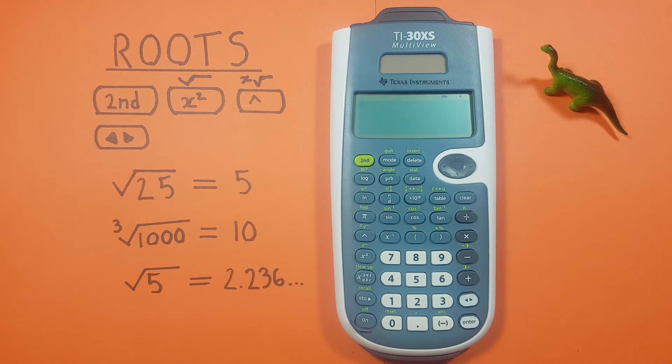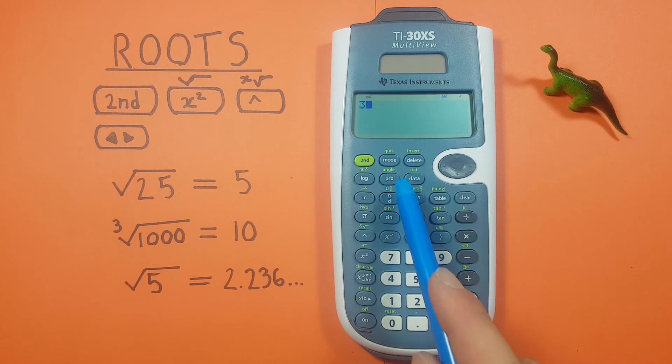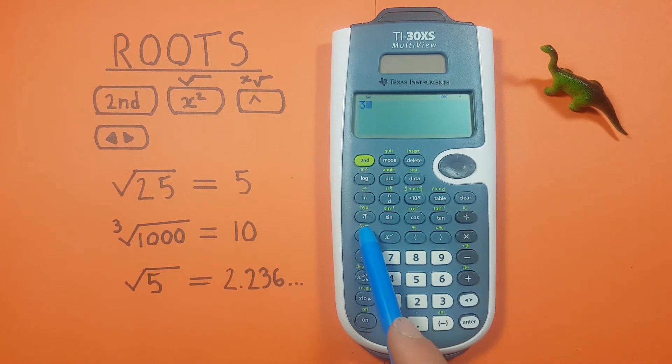But what if we want a root that isn't a square root, like say a cube root? Well to do that we use the x root key, that's this one here. We start by entering our base which in this case is 3, so we go 3, second, then the caret which is the x root key.